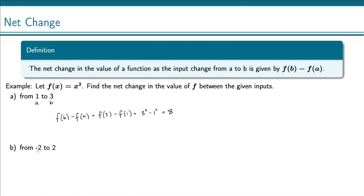For part b, changing from negative 2 to 2, again f of b minus f of a. So this is f of 2 minus f of negative 2. Notice that it's f of the larger number minus f of the smaller number.